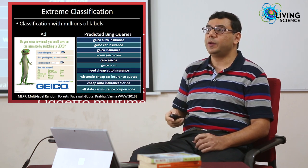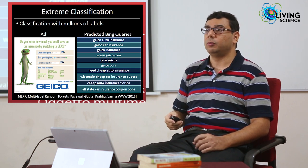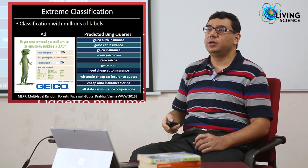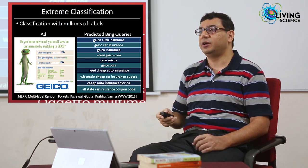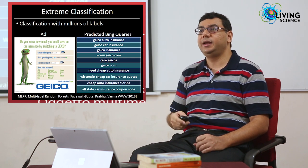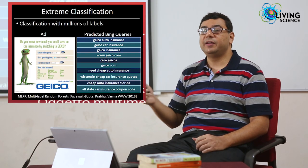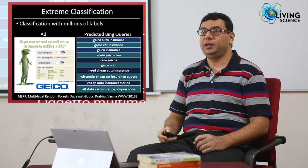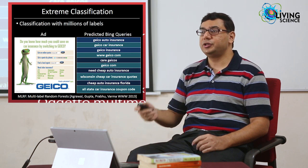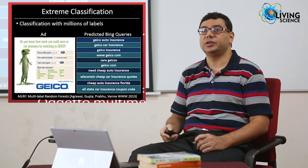This was a completely new and different way of thinking about the problem, and as a result MLRF gave significantly higher precision and coverage compared to the leading techniques in production at Bing — coverage went up by about 30% and precision by about 5%. This led to the creation of a new research area called extreme classification, which deals with multi-class and multi-label problems involving millions of labels.